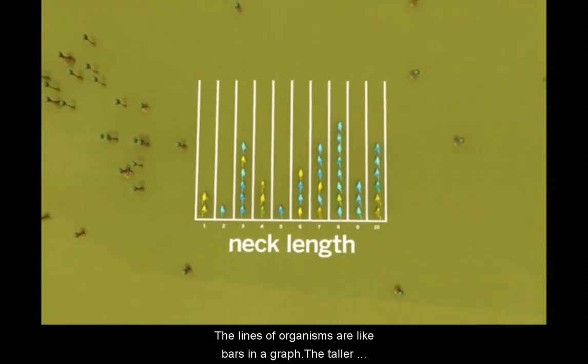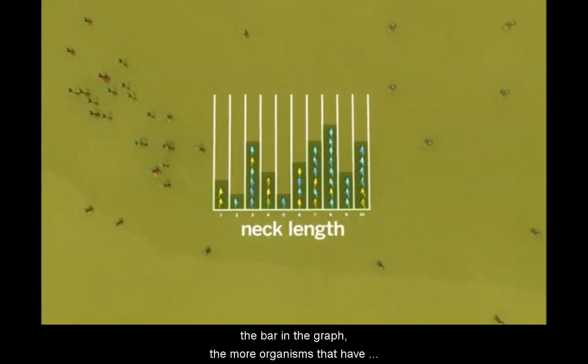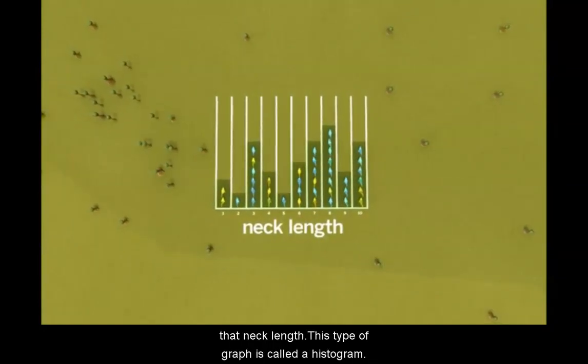The lines of organisms are like bars in a graph. The taller the bar in the graph, the more organisms that have that neck length. This type of graph is called a histogram.